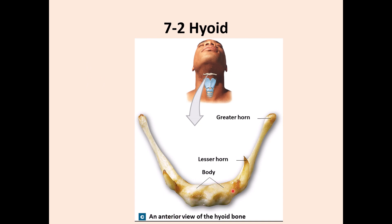This is the hyoid bone. It is just one single bone in the neck, and there are many different muscles attached to it — you will see that when we get to chapter 11. It has a body, lesser horns, and greater horns. At this point you may not see the importance of this, but in the muscle section you will see different muscles attached to those structures.